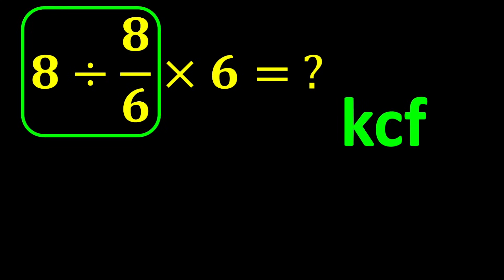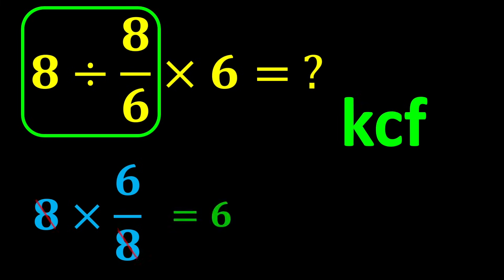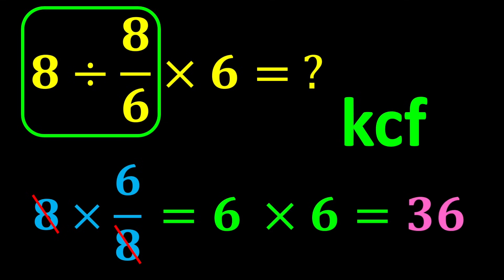To solve this part of the question, we use the KCF rule. K stands for keep, C stands for change, and F stands for flip. Keep the first number as it is, change the division sign to multiplication, and flip the second number — take its reciprocal. Therefore, 8 divided by 8 over 6 becomes 8 times 6 over 8. The 8's simplify with each other, leaving only 6. And finally, 6 times 6 gives us 36. 36 is our final answer.